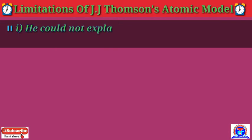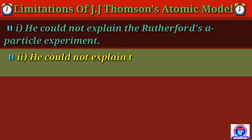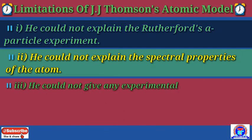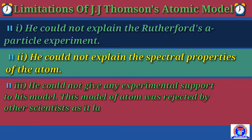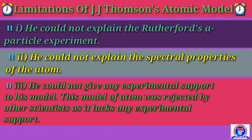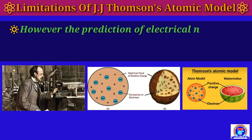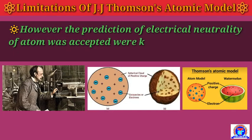The limitations of this model are as follows: number one, it could not explain Rutherford's alpha particle experiment; number two, it could not explain the spectral properties of atoms; number three, it could not give any experimental support. This model was rejected by other scientists as it lacked experimental support.